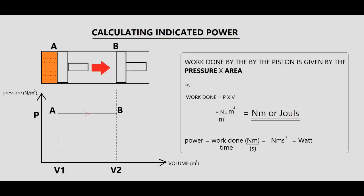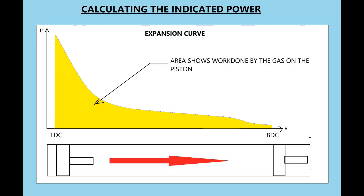Now we will see how to calculate indicated power. Suppose the gas in the cylinder expands at a constant pressure P — we can see it on the graph also. Just to remember that the units for work done is joule and the units for power is watt. In real case when the piston moves from TDC to BDC, pressure does not remain constant as shown here. The area under the graph shows the work done by the gas on the piston.